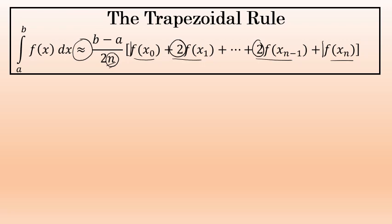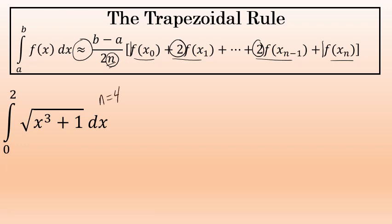I have another video that goes into more detail on how the trapezoidal rule is derived — you can find a link to that in the description. In this video, we'll simply apply the trapezoidal rule to approximate the integral from 0 to 2 of the square root of x to the third plus 1 dx. In this problem, the directions ask us to let n equal 4.